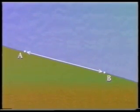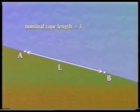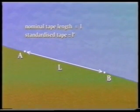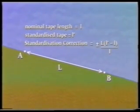For example, a line AB is measured using a tape laid along the ground surface and found to be L meters. If the tape has a nominal length of L and a standardized length of L-dashed, then the standardization correction is given by this formula. It can be positive or negative depending on the values of L and L-dashed.